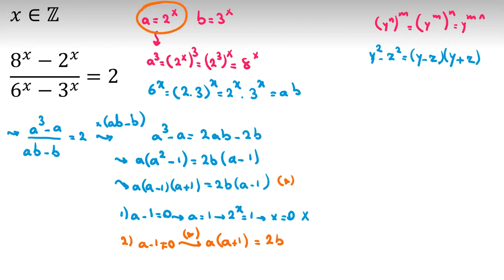Now let's replace a, we know a is 2 to the x and x is also integer. So if we replace 2 to the x times 2 to the x plus 1 equal to 2 times b, which b is 3 to the x. 2 times 3 to the x.